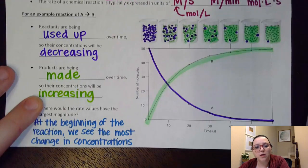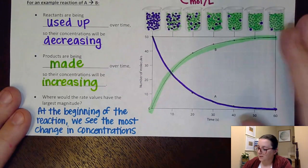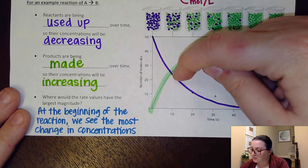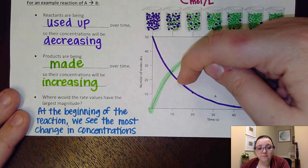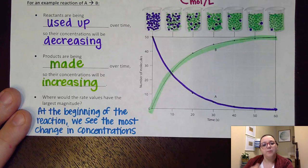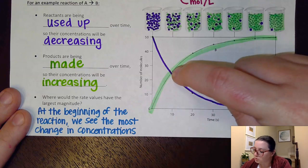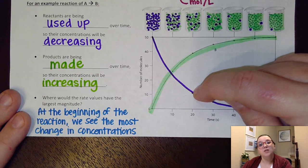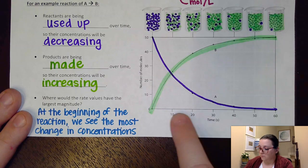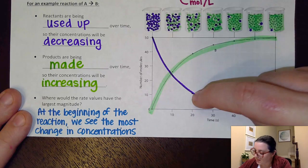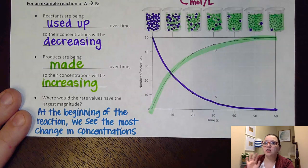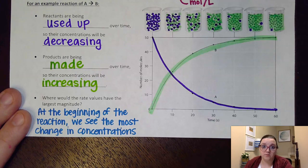And so if we think about this idea that rate equals the change in concentration over the change in time, let's kind of evaluate here what's going on with our reactant A. You notice in the first 10 seconds here, we're going from about 50 to maybe about 25. So we're changing 25 molecules over 10 seconds. But now look at the next 10 seconds. From 10 to 20, we changed from 25 to maybe about 10. So that only changed 15 molecules over the 10 seconds. The next 10 seconds from 20 to 30, we're going from 10 down to about 5. So now we're only changing by 5 molecules over that course of 10 seconds.